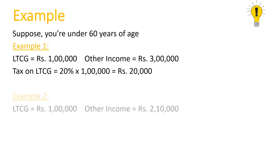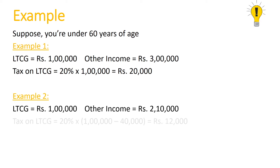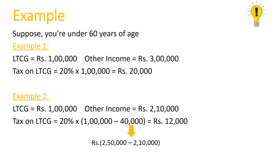Let us consider another example. In this case as well, your long-term capital gain is Rs. 1,00,000, but your total income excluding long-term capital gain is Rs. 2,10,000. Since your total income excluding LTCG is less than the exemption limit of Rs. 2,50,000, you will have to pay tax only on the balance amount — Rs. 60,000 — at 20%. So your capital gain tax will be Rs. 12,000.